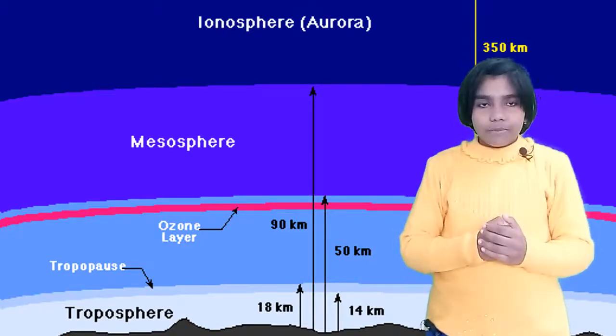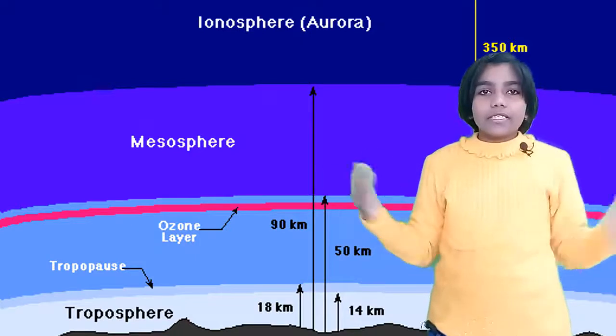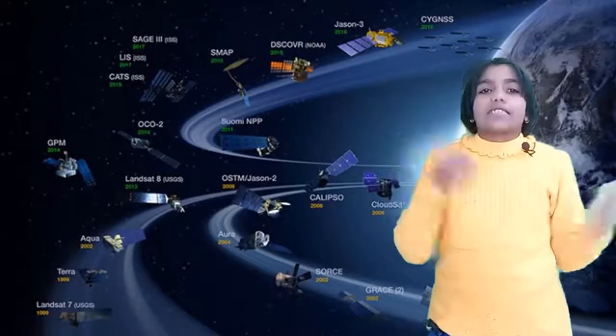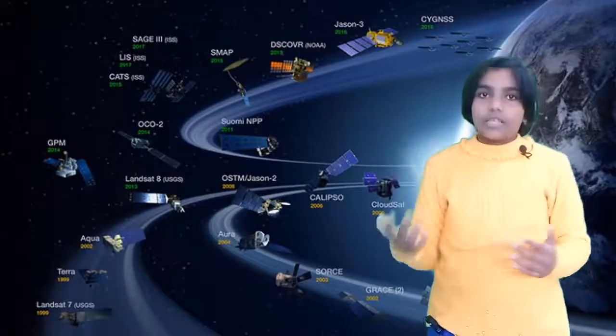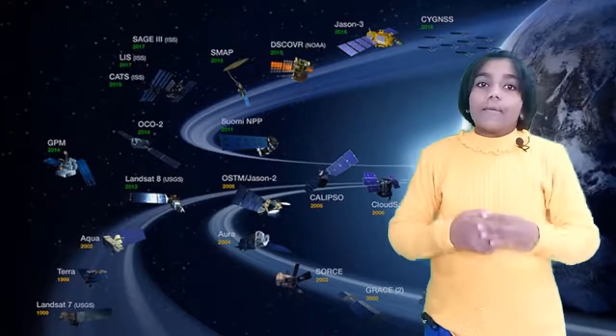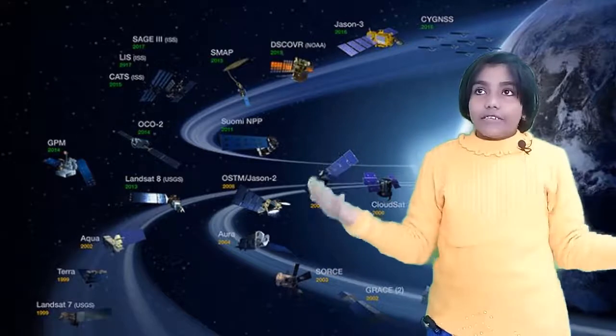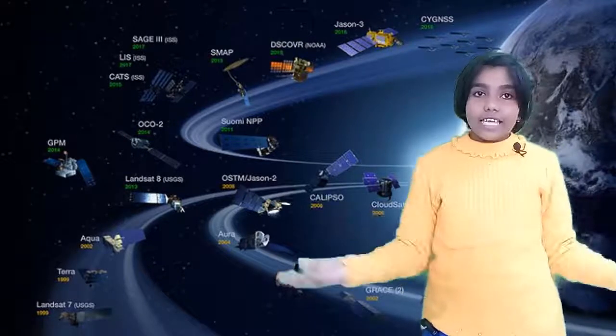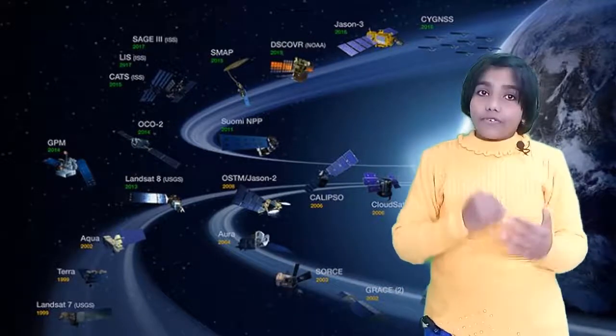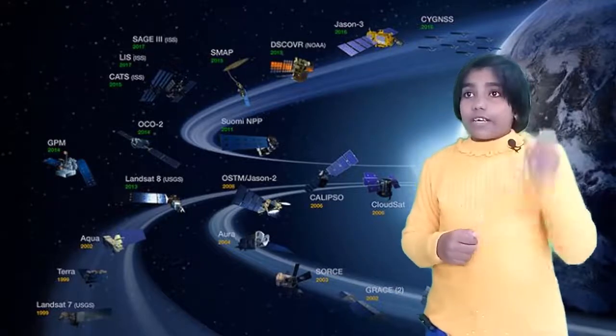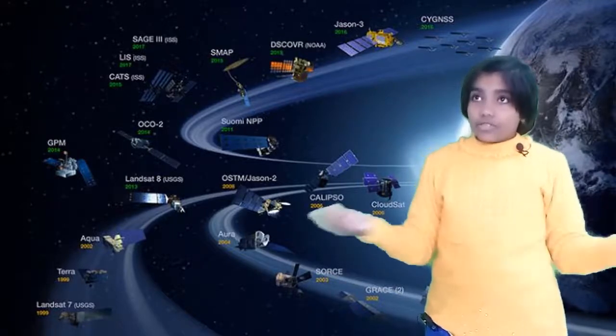Troposphere: in troposphere, people, animals, plants they live. Second one, stratosphere: in stratosphere, jet planes can fly. In ionosphere, electrical things can charge. And the fourth layer, exosphere: in exosphere, that is also called the outer space. In that, astronauts go.